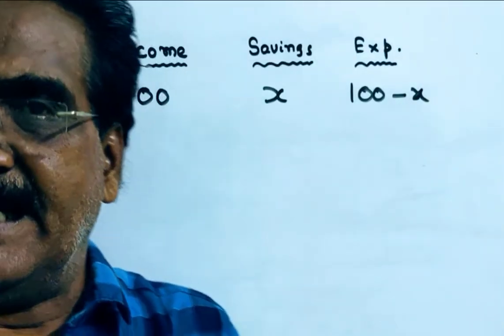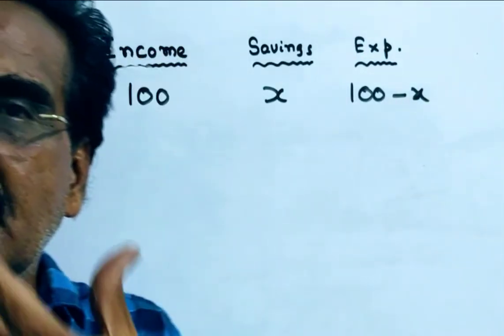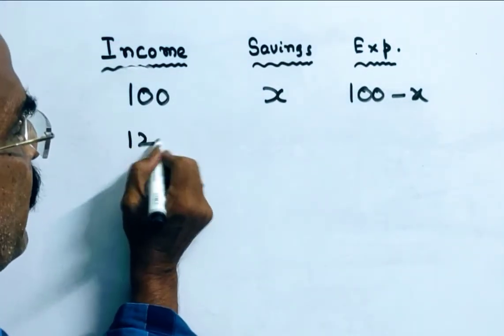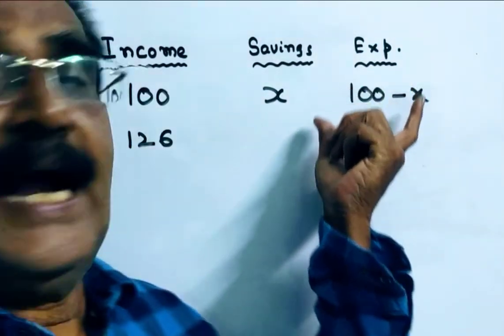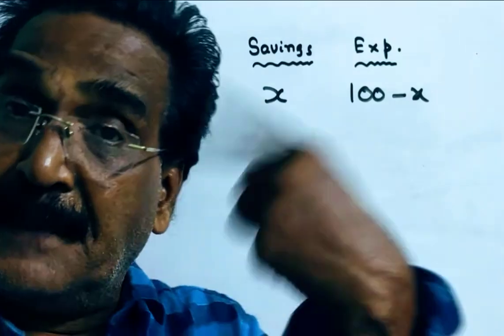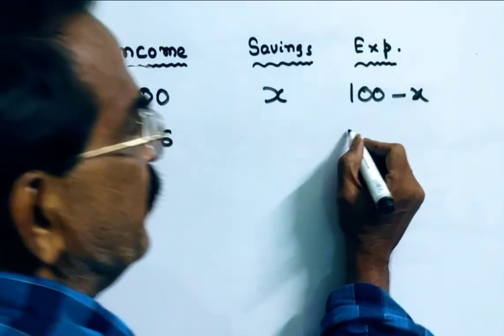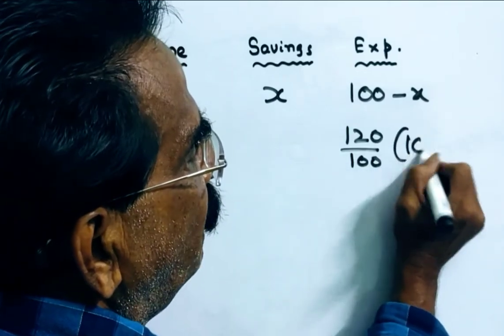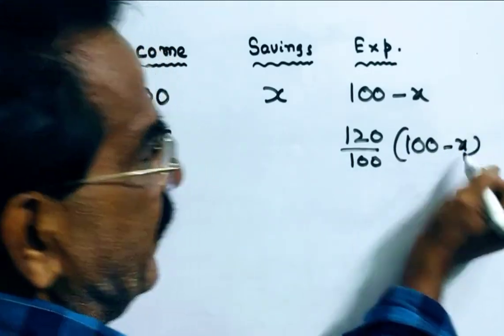Friends, further it is given that, if the income is increased by 26 percent, so if the income is 126 and expenditure is increased by 20 percent, 20 percent means increased by 20 percent means 120 by 100 of 100 minus X.